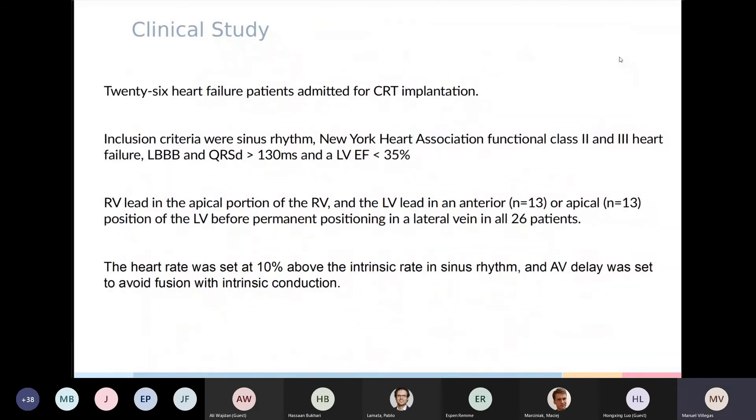In addition to the animal experiment, a clinical study was done with 26 heart failure patients that were admitted for CRT implantation according to current guidelines, with the inclusion criteria of sinus rhythm functional classes 2 and 3 of heart failure, LBBB, QRS duration larger than 130 milliseconds, and an ejection fraction lower than 35%. All patients had the RV lead placed in the apical portion of the right ventricle, but to test different lead placements, the left ventricle lead was placed in an anterior position for 13 patients and in an apical position for another 13, before the permanent position in the lateral vein. So each patient was paced from the atrium, the right ventricle, left ventricle, and biventricular, with a heart rate that was set at 10% above the intrinsic rate and an AV delay set to avoid fusion with intrinsic conduction.